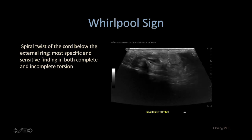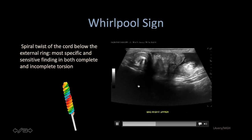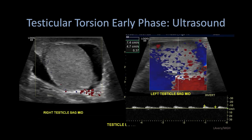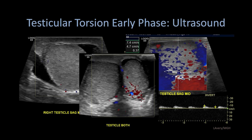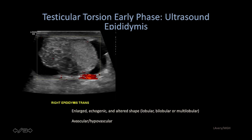Now we'll see the whirlpool sign of the twisted spermatic cord — this nice whirling, twisting appearance. Here's another case of testicular torsion where the testicles have similar echogenicity bilaterally, but there's a small reactive hydrocele on the right. Doppler imaging demonstrates no discernible blood flow within the right testicle, consistent with testicular torsion. This is the buddy view — the right and left testicles on the same image to confirm consistent Doppler evaluation. On further evaluation, the epididymis is enlarged and heterogeneous in echo texture but without any blood flow within the epididymal region, unlike epididymitis which would show increased blood flow.